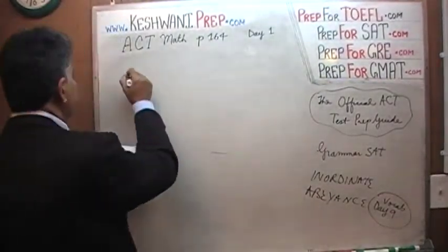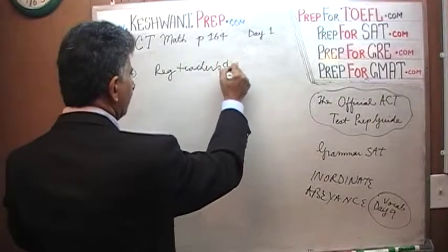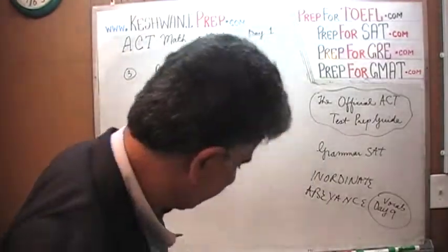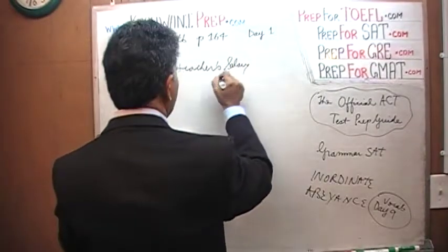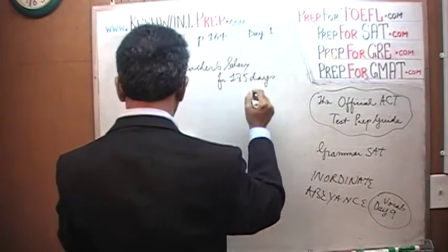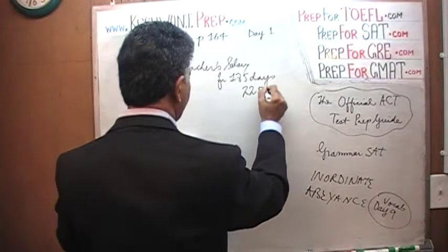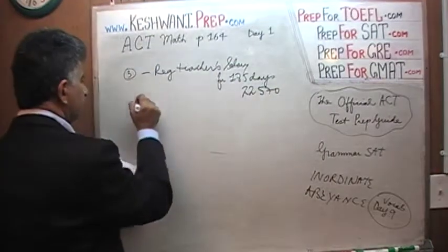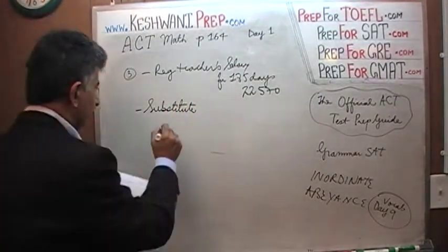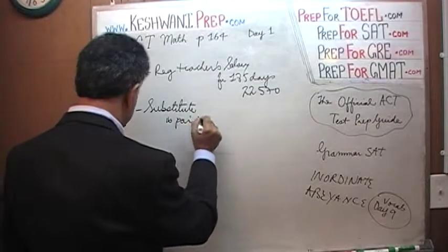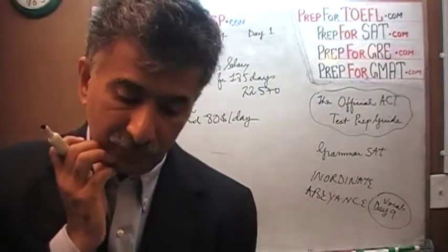In number 3, we are told that the regular teacher's salary for 185 days is $22,570. The substitute teacher gets paid $80 per day. The question is: if the regular teacher were absent one day, how much money would the school save?